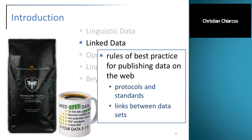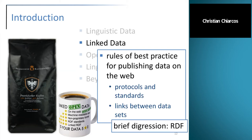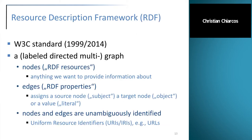Linked data refers to a set of rules and best practices for publishing data on the web, including protocols and standards and the requirement to provide links between data sets. Before we dive into this more deeply, first a brief digression into RDF, because this is one of the cornerstones of linked open data. RDF — the Resource Description Framework — is a W3C standard.